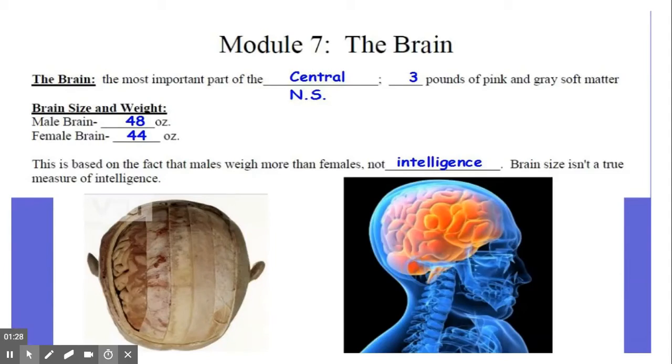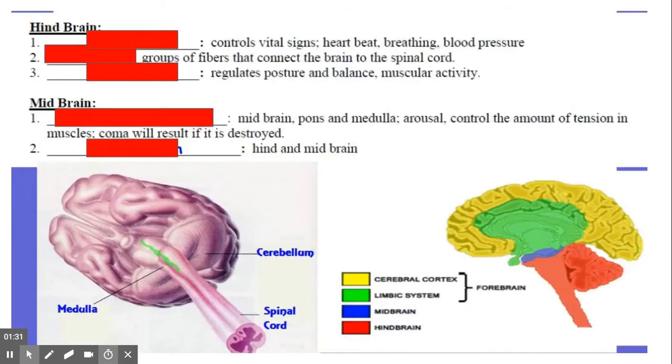The hindbrain controls vital functions, and part of that is the medulla. The medulla is right at the top of the spinal cord and controls our vitals - heartbeat, breathing, and blood pressure. If someone would have damage to the medulla, it would be the end of their life because these are the vitals that keep us alive on a day-to-day basis.